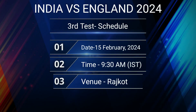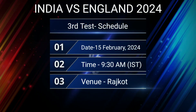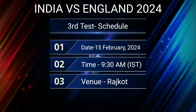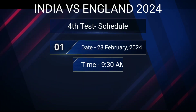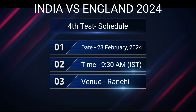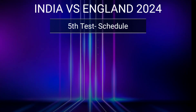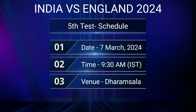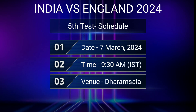India vs. England Third Test Match Schedule: Date 15 February 2024, Time 9:30 AM Indian Standard Time, Venue Rajkot. India vs. England Fourth Test Match Schedule: Date 23 February 2024, Time 9:30 AM Indian Standard Time, Venue Ranchi. India vs. England Fifth Test Match Schedule: Date 7 March 2024, Time 9:30 AM Indian Standard Time, Venue Dharamsala.